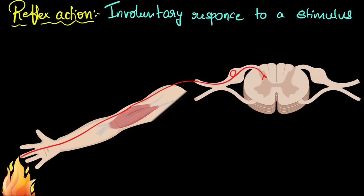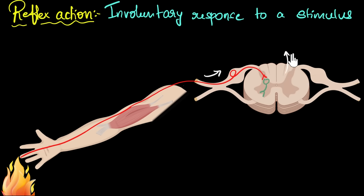What happens after that? That signal is taken by another neuron in the spinal cord. Then that signal goes to the brain — the neuron sends that signal to the brain. And this is what happens all the time; there's nothing different here.